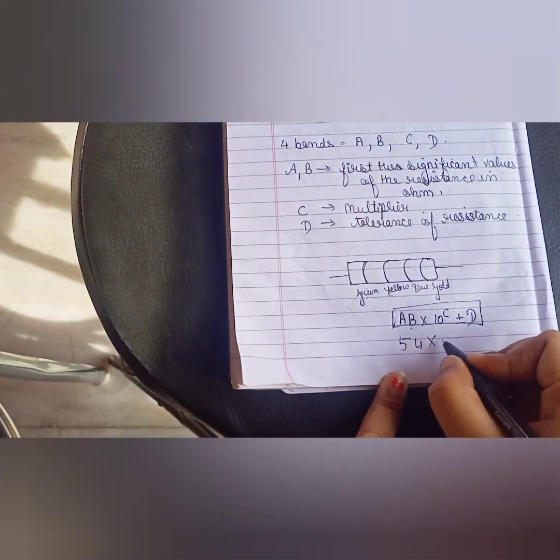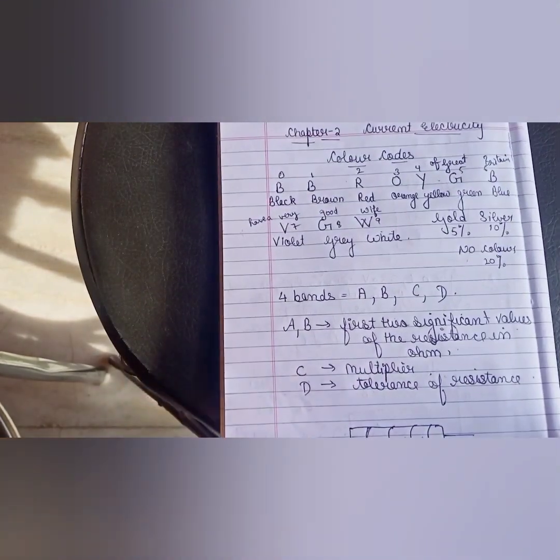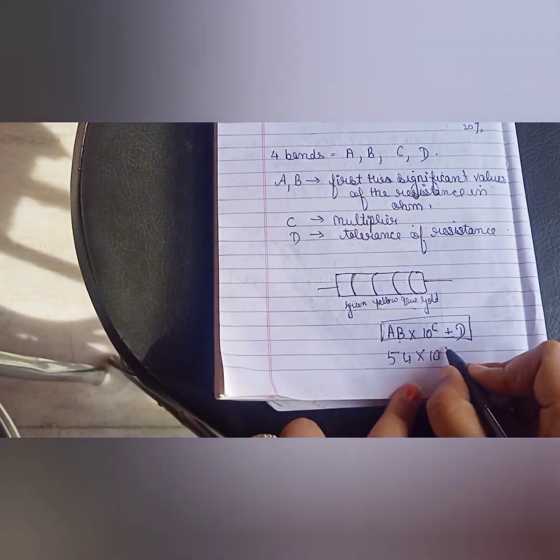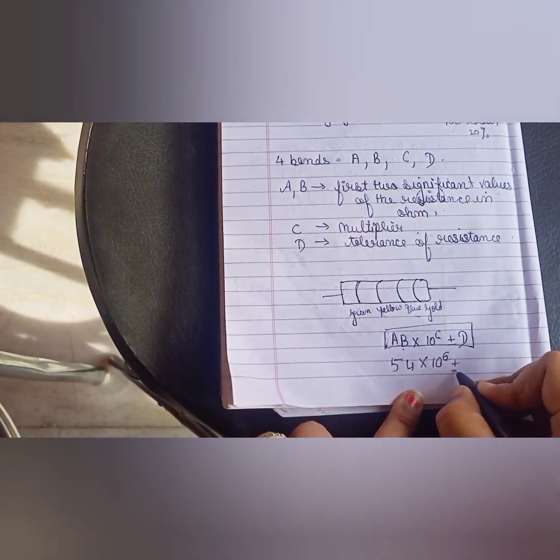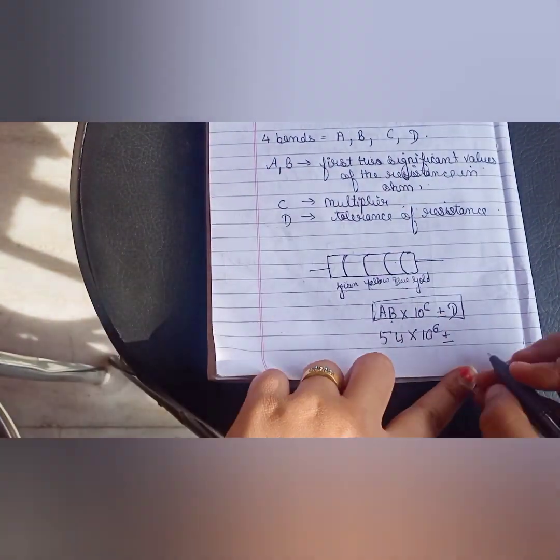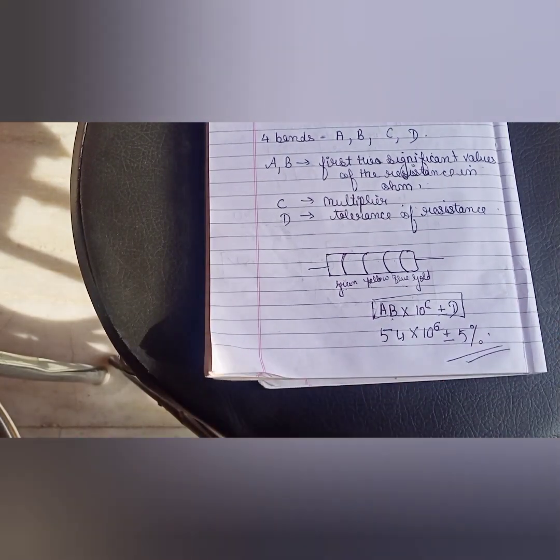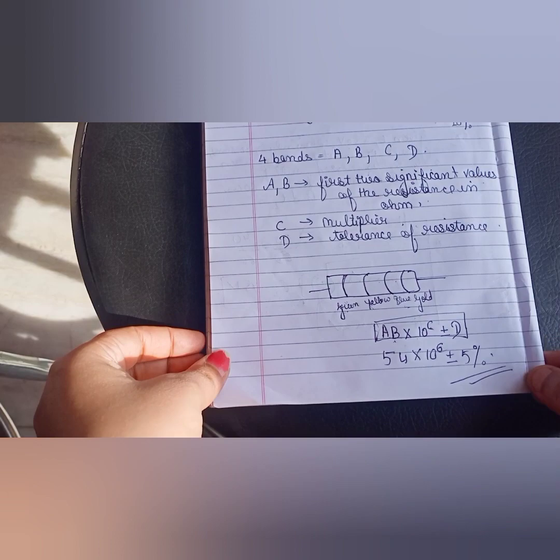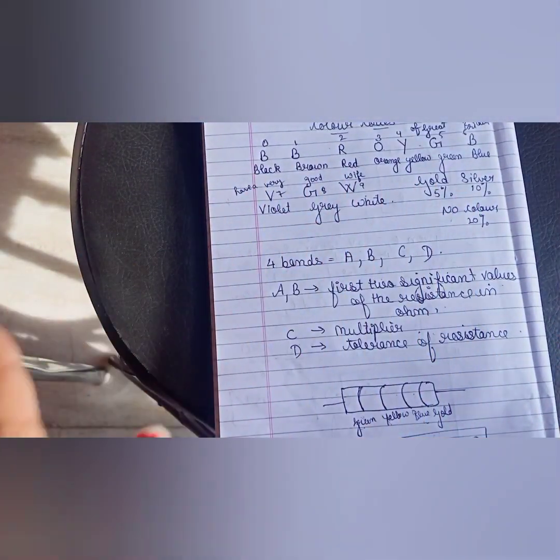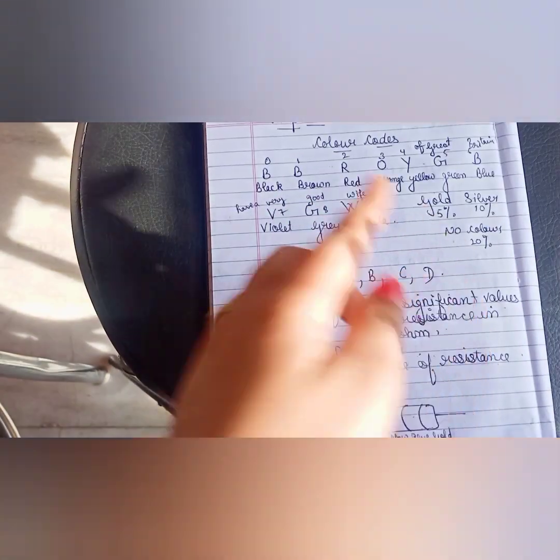Then, multiply 10 power C, which is the next band? 6. Plus minus D. D is gold. And what percentage of gold is gold? 5%. So, you can write here 5%. So, this is your answer. So, you will use this formula to calculate the formula. I will give you colors. But you should know which color is in the series. You can learn this series. B.B. Roy of Great Britain. Have a very good wife.